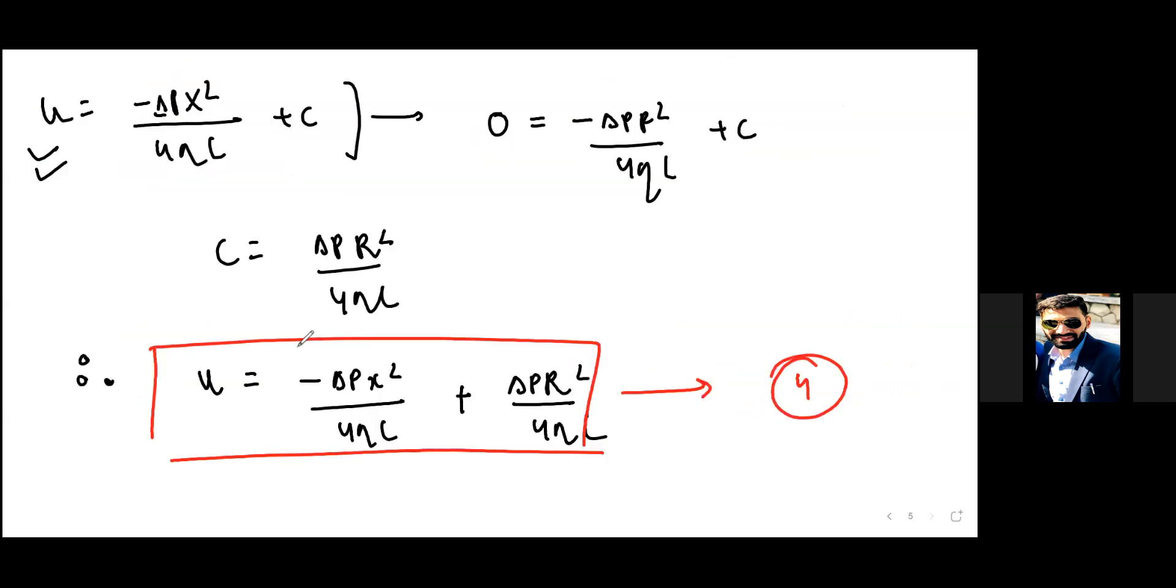Now what we have to do is—this is just velocity, a velocity at a distance x. But we need to also have the flow rate. So what we will do is, if we integrate ux over the entirety, we can get the flow rate.